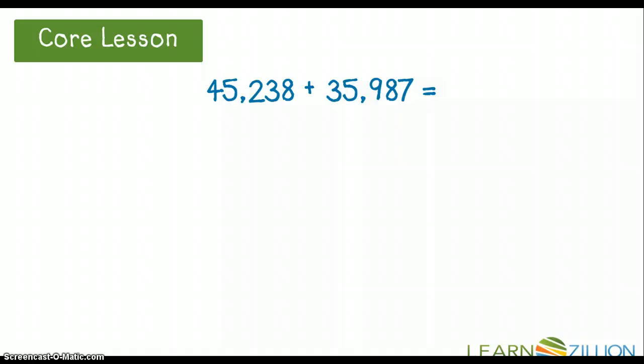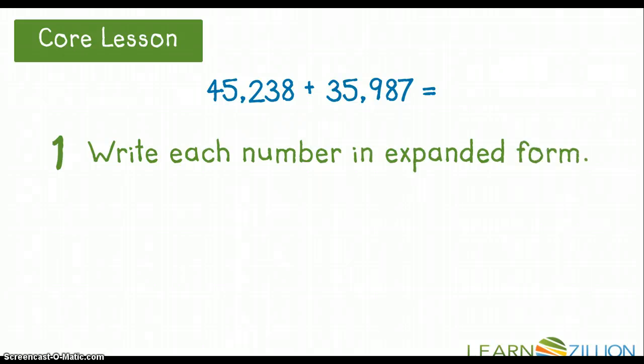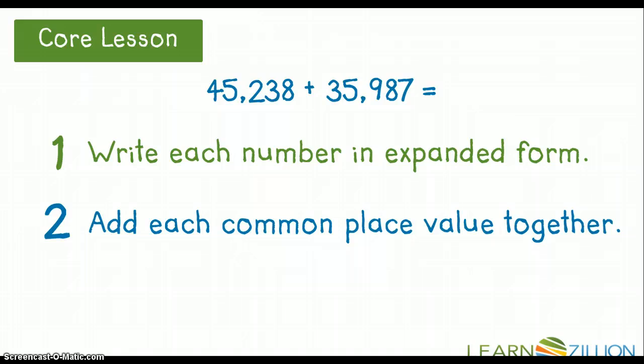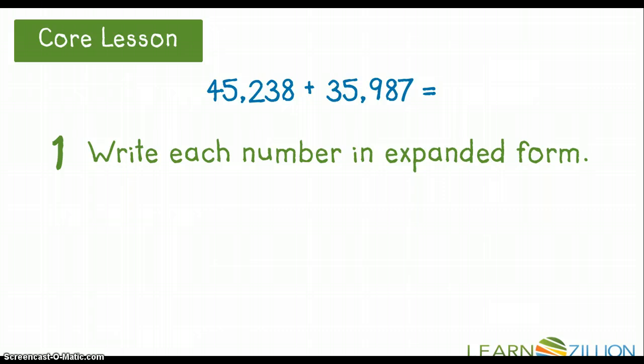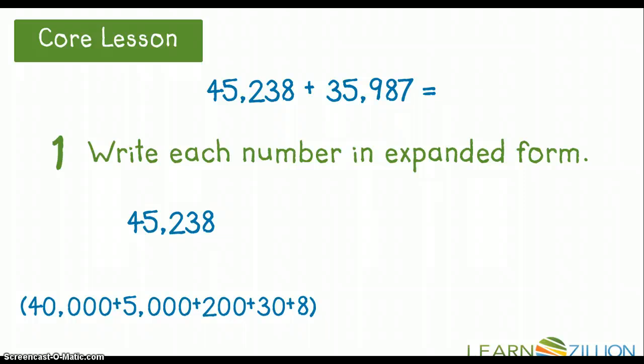So let's take a look at these two numbers: 45,238 plus 35,987. Our first step whenever we're using the partial sums method of adding is to write each number in expanded form. The second step in doing partial sums is to add each common place value together. And then the third step is to add the partial sums together. So let's take a look at that. We've already written down our 45,238 in expanded form. And there it is. We have 40,000 plus 5,000 plus 200 plus 30 plus 8.